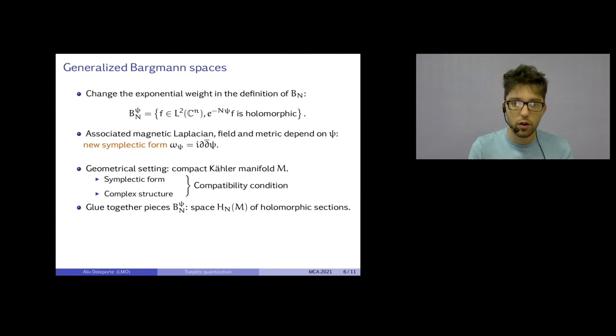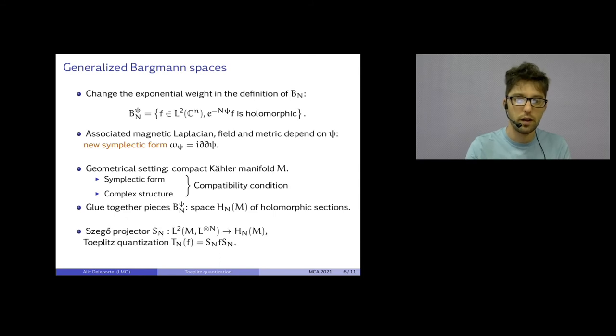And, when I glue them together, the weight changes. So, this produces a space, Hn, of holomorphic things. It's not a space of functions, but it's close to it. It's a space of holomorphic sections. But, we're going to see examples where we interpret them as natural holomorphic objects. Once you have this definition of the space of holomorphic thingies, by gluing together the pieces, you can define the Szegő or Bergman projector and the Toeplitz quantization exactly in the same way.